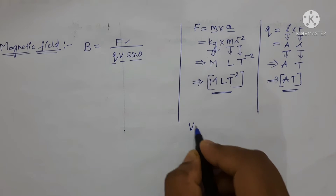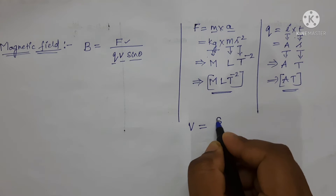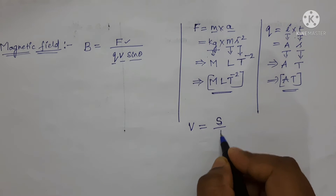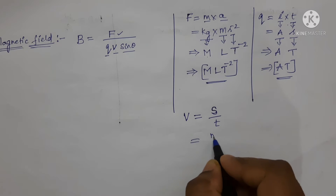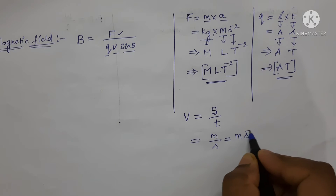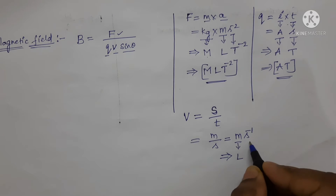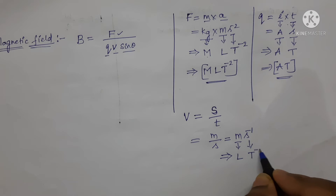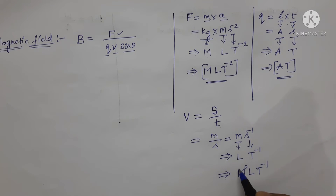Now let us find the dimensional formula for velocity. Velocity is displacement per unit time, written as S/t. The SI unit of displacement is meter and time is second, giving meter per second, which simplifies to M·S⁻¹. Writing the dimensions: meter is L and second is T, so it becomes L T⁻¹. Since the mass term is absent, we write M⁰. The dimensional formula for velocity is [M⁰ L T⁻¹].